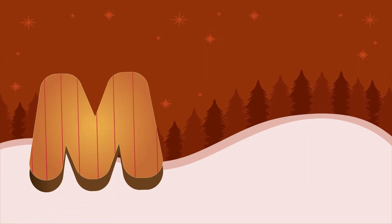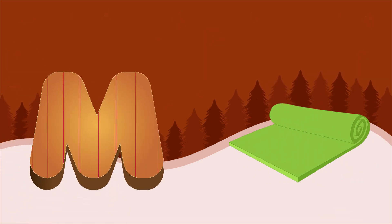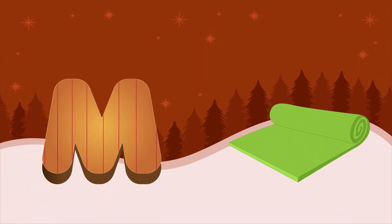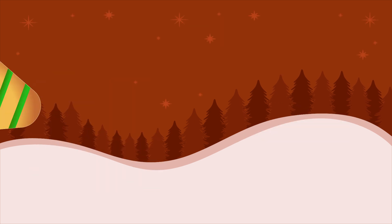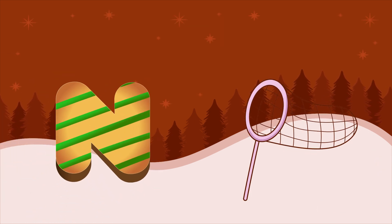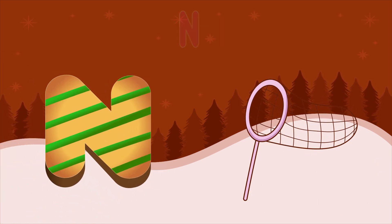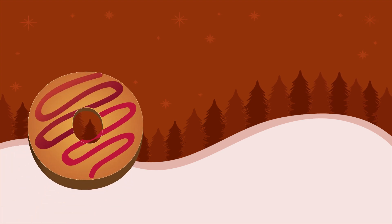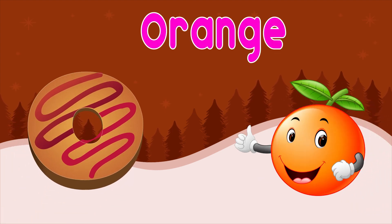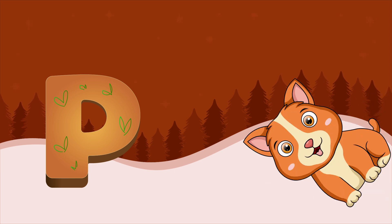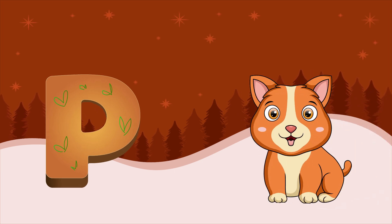M is for mat, m-m-mat. N is for net, n-n-net. O is for orange, o-o-orange. P is for pet, p-p-pet.